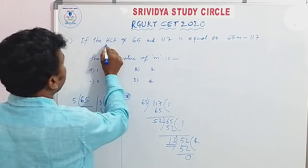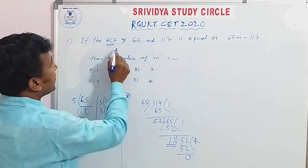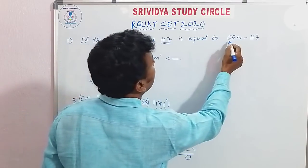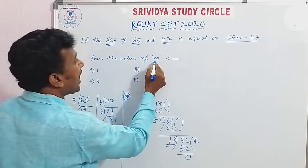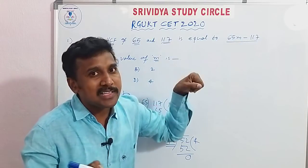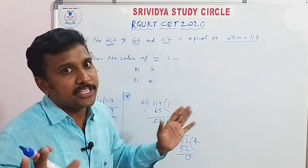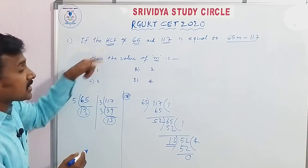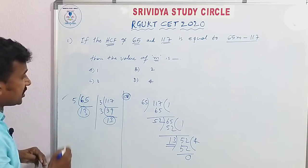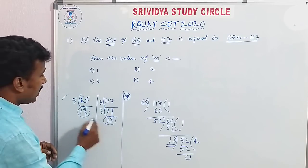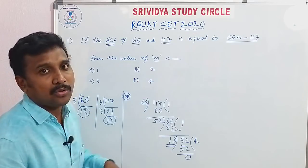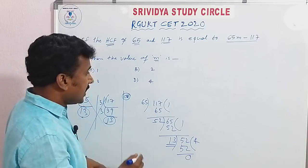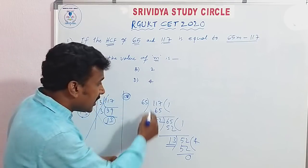If the HCF of 65 and 117 is equal to the given value, then find the value of M. The value of M is what we are asking. In the same factorization method, you know it's a matter of 16. Since we have a common factor, since we are factoring out of 65, you can do it in 15 to 30 seconds. Usually there will be a halfway approach — but here's the solution.